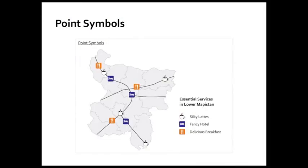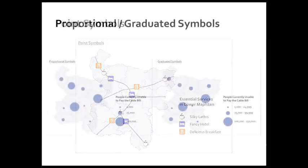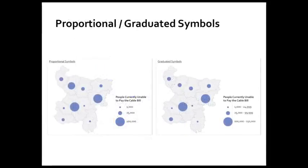This is a wonderful little regional map that I've made of one of my favorite places — this is Lower Mapistan. It shows the locations of silky lattes, fancy hotels, and delicious breakfasts. This is the kind of map I would need if I'm on a road trip somewhere. You can also do things with point symbols where you drive the symbol size and shape itself by the underlying data.